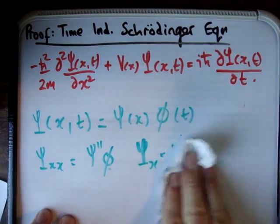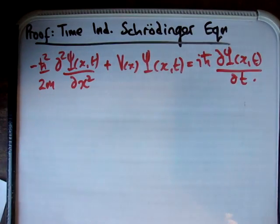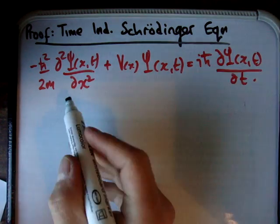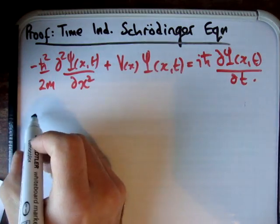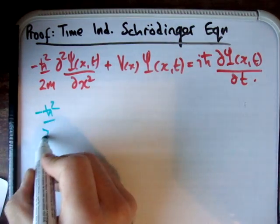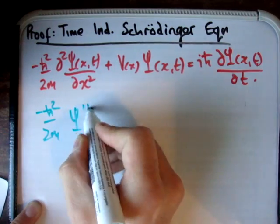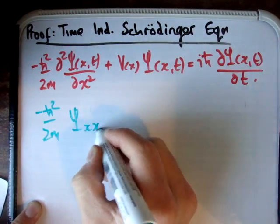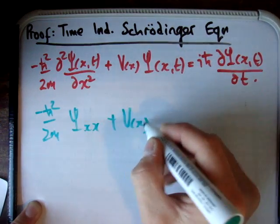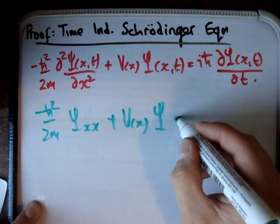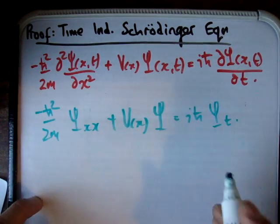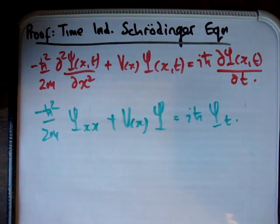Let's see what we can do to the Schrödinger equation as a result of that. Using the green biro: minus h-bar squared over 2m, this is going to be capital psi sub xx, plus V of x times capital psi, is equal to i times h-bar times capital psi sub t.